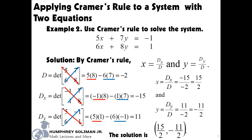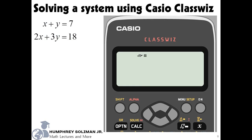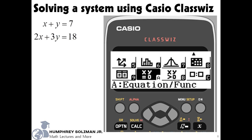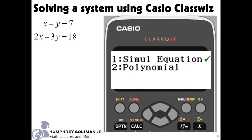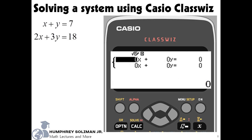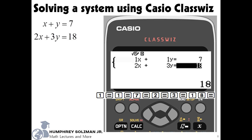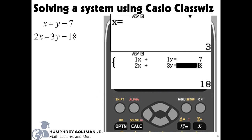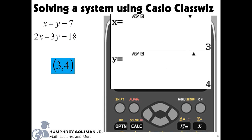Now let's try to solve a system using Casio ClassWiz calculator FX991EX. Start by putting the calculator in equation mode. Next, choose simultaneous equations, option 1. Next, choose 2 unknowns. We are now ready to input the numerical coefficients and the constants of the equations. You can follow the string of keys if you like. Then press the equals key 2 times to see the value of x — x equals 3, and the value of y — y equals 4. The solution for the system is 3 and 4.